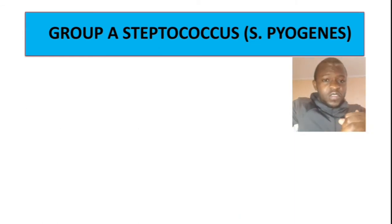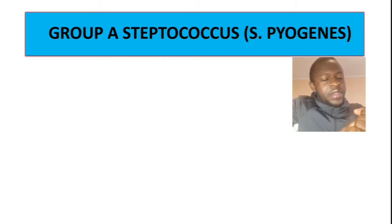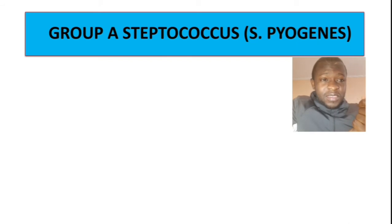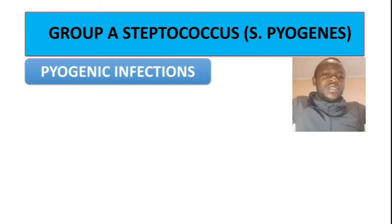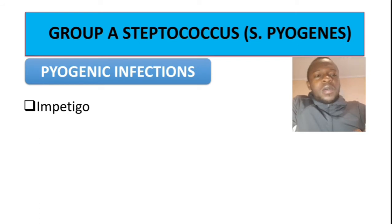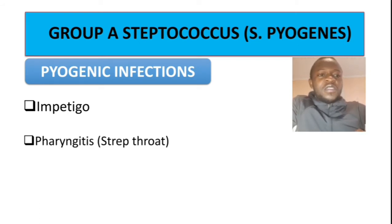Now let's talk about the diseases caused by Streptococcus pyogenes. You can divide them into two groups: pyogenic infections and infections mediated by toxins. Starting with pyogenic infections, firstly you need to know a superficial skin infection called impetigo, and also pharyngitis, commonly known as strep throat.